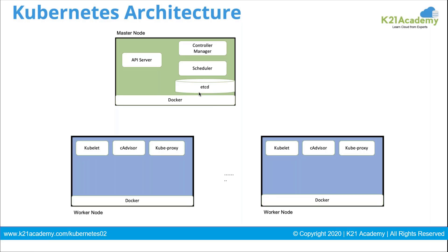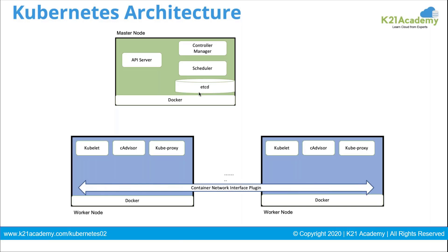The master comes with those roles and processes, and the worker nodes come with the agent. Kubelet is the agent, which runs alongside cAdvisor. cAdvisor helps monitor the resources utilized by containers running on that particular node. kube-proxy provides the ability to reach those containers. The master is the control plane part, and kube-proxy operates on the data plane part.